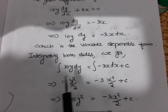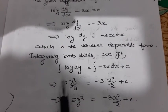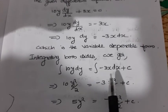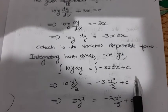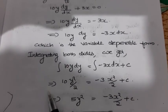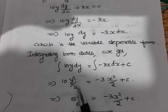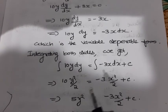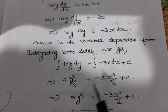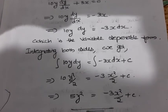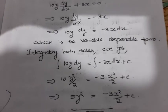Integrating on both sides, we get integral of 10y dy = integral of −3x dx + c. Taking constants outside: 10 · y²/2 = −3 · x²/2 + c.